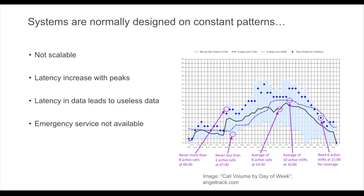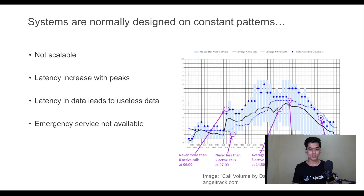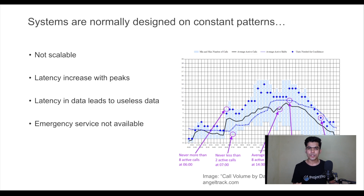Most old systems are designed on a constant pattern with two main problems. First, they are not scalable — if data size increases or a peak occurs, they may not handle it. Second, latency increases with peak load. If many accidents happen simultaneously, you get data latency and may not receive data on time. If an accident happens and you receive the data after a few hours, it's completely useless.